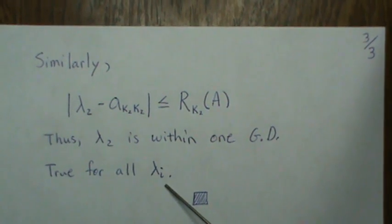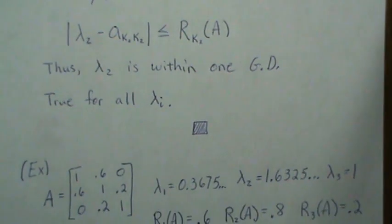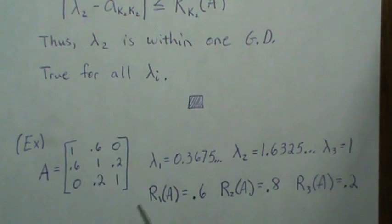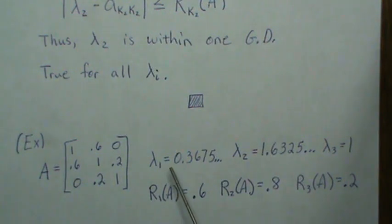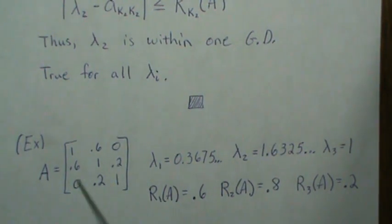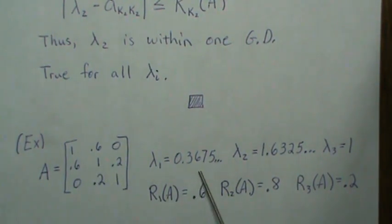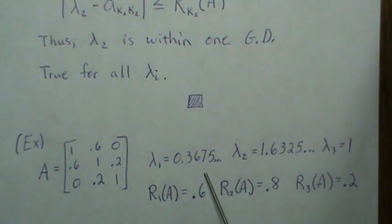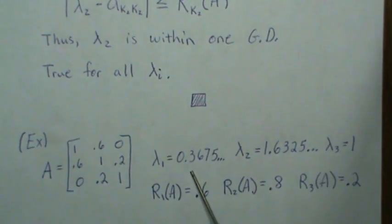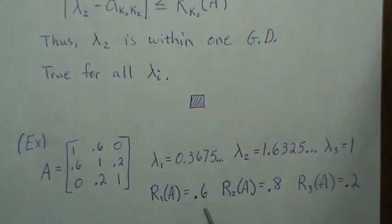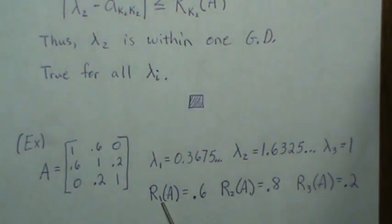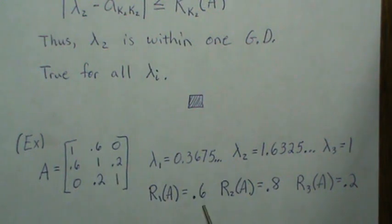So let's do a quick example. Let's set up this correlation matrix, and putting it in a program to solve, we get these as the lambda values: 0.36 something, 1.6 something, and 1. Now the row sum is the sum of all the elements not the diagonals, so this is 0.6, row 2 is going to be 0.8, row 3 is 0.2.